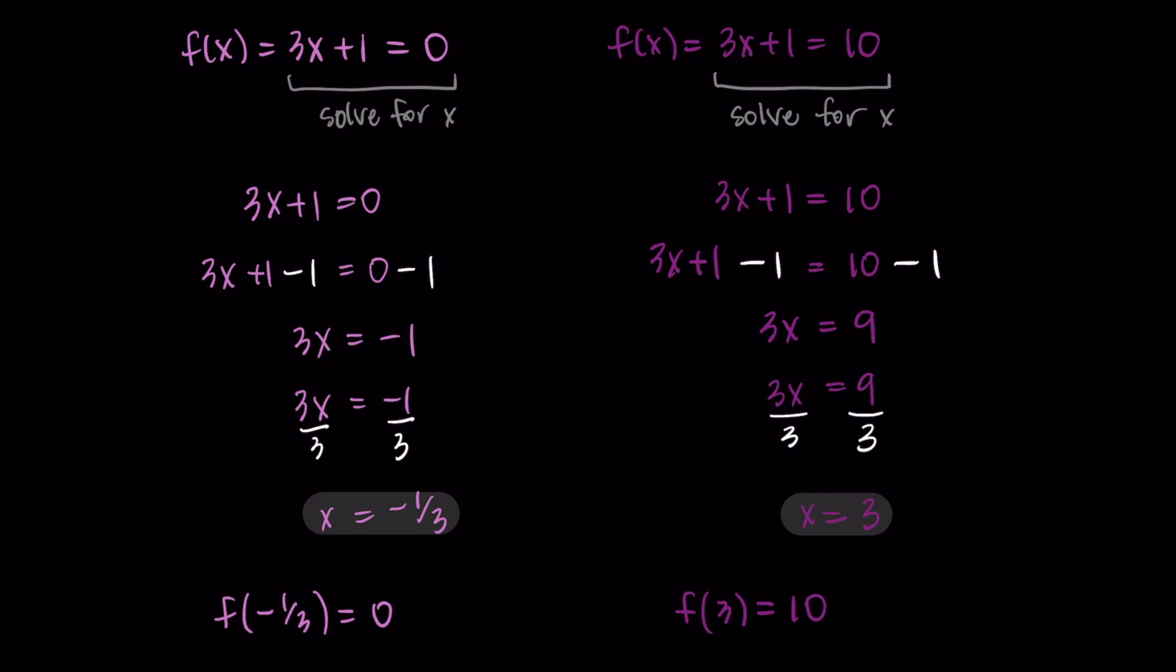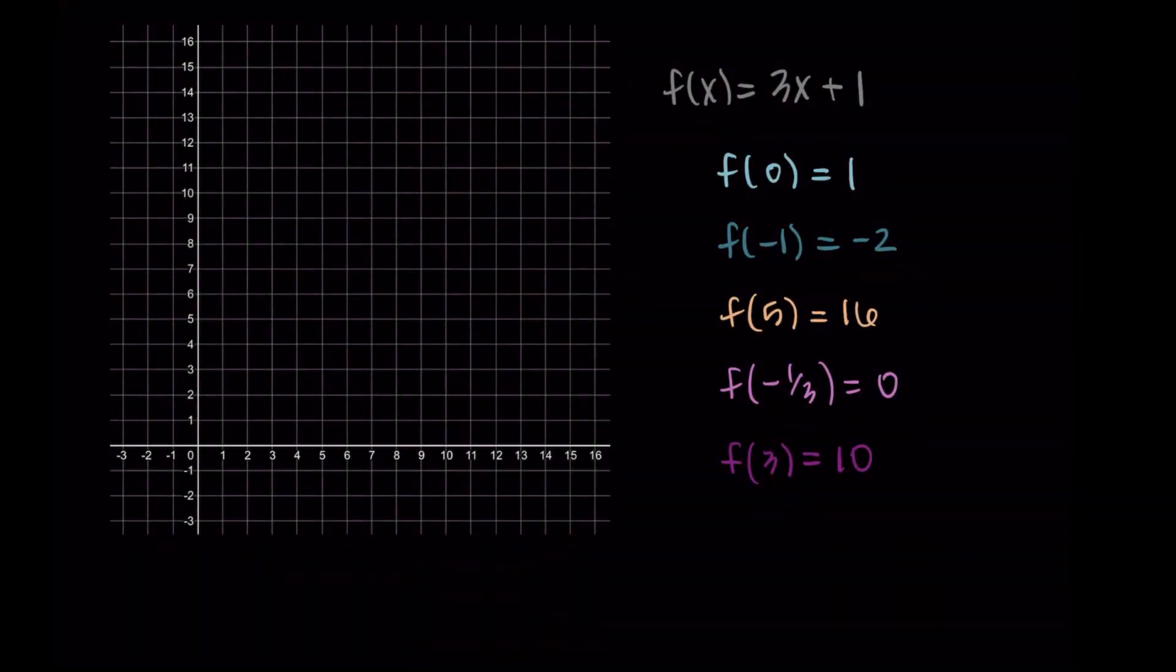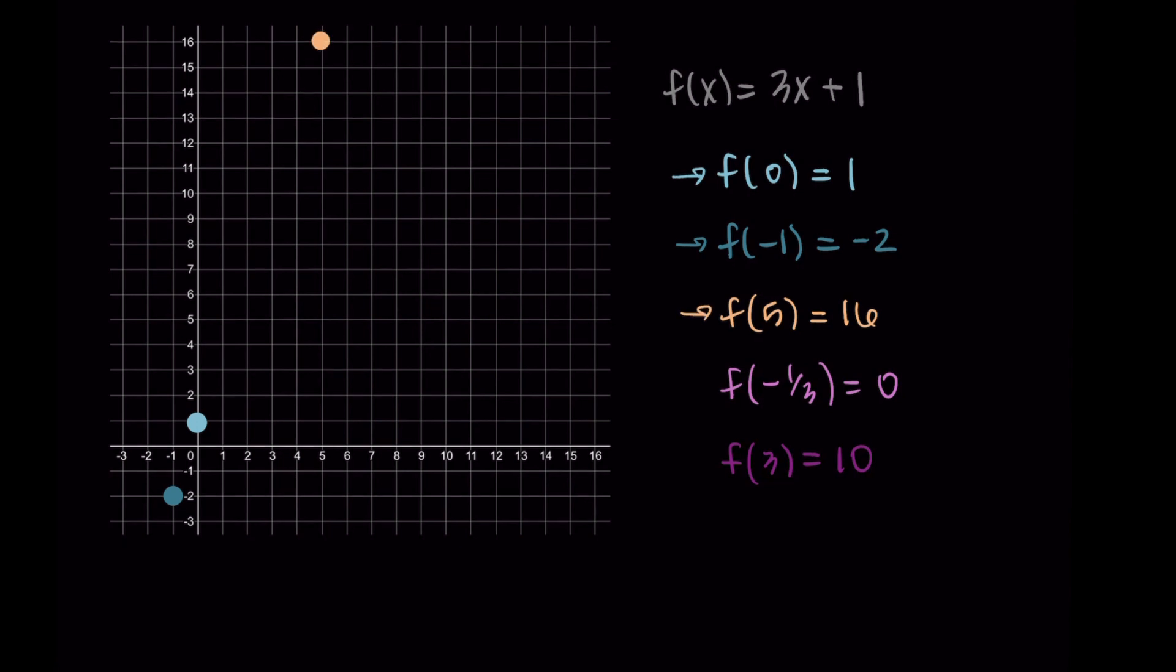For this example, we found five different values using function notation. Our function was 3x + 1, and here are the values we found. Let's graph them all to make sure everything looks good. I have f(0) = 1, that's the point (0, 1). f(-1) = -2, that's the point (-1, -2). f(5) = 16, that's the point (5, 16). Then I have (-1/3, 0) and (3, 10). Those are my points, and we can see our line between all of those points looks good. They're all on the line.